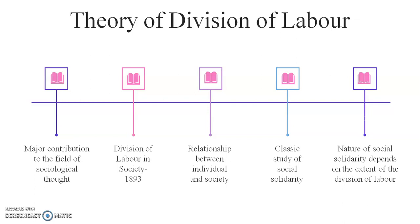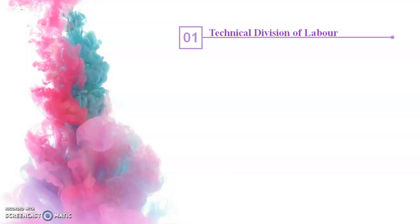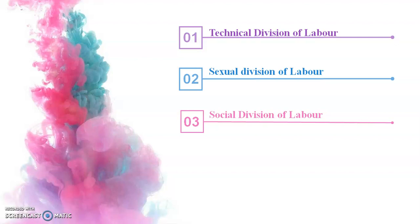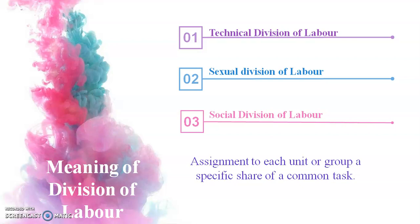The concept of division of labor has been used in three ways: first, the technical division of labor, which describes the production process; second, the sexual division of labor, which describes social divisions between men and women; and third, the social division of labor, which refers to differentiation in society as a whole. It is in this third sense that Durkheim uses the term. Division of labor involves the assignment to each unit or group of a specific share of a common task.